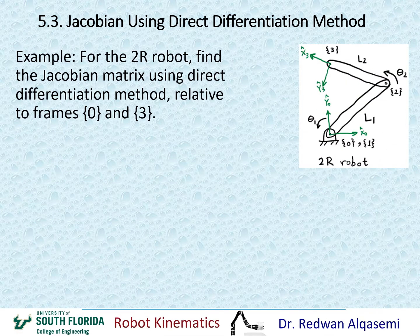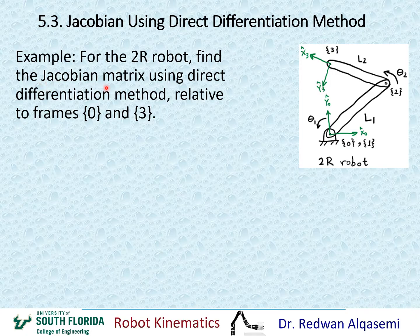Let's take an example on how to find the Jacobian using direct differentiation. For this example, we're going to use a 2R robot with two joints: joint 1 with theta 1 and joint 2 with theta 2. We have ground frame 0 and end effector frame 3. We need to find the Jacobian matrix in reference to frame 0 and frame 3. When we use direct differentiation, the Jacobian is in reference to frame 0, and then we can use the rotation matrix to find the Jacobian in reference frame 3.